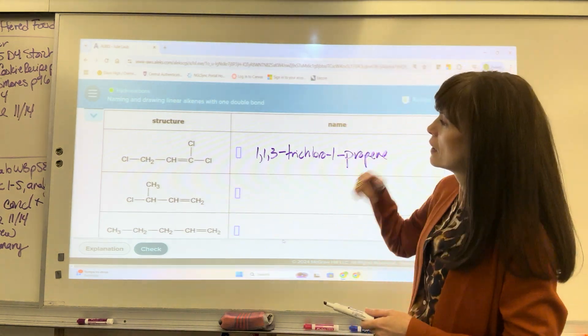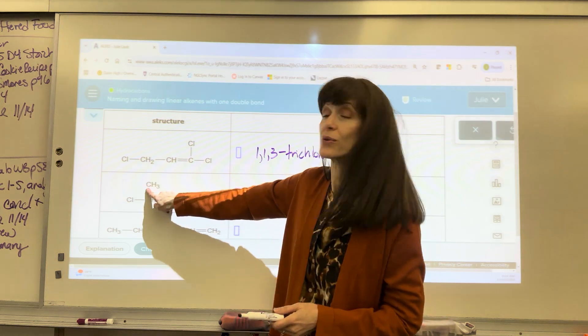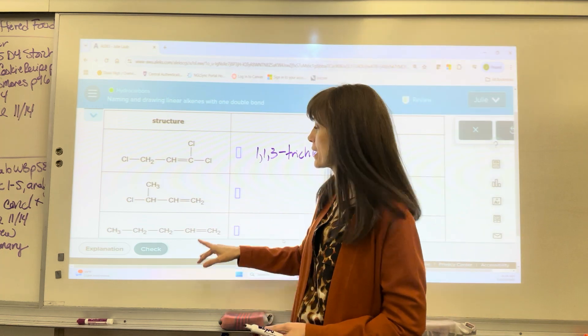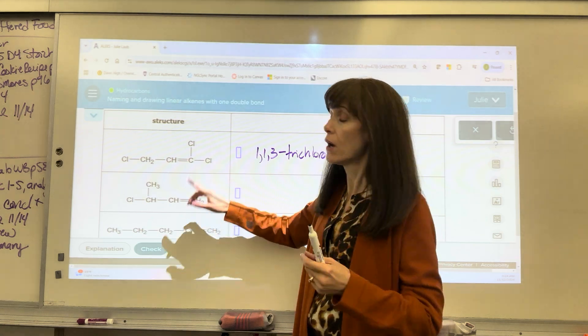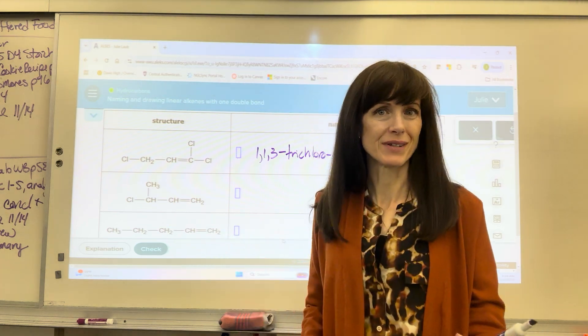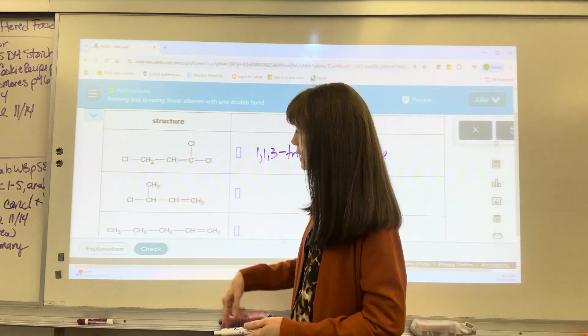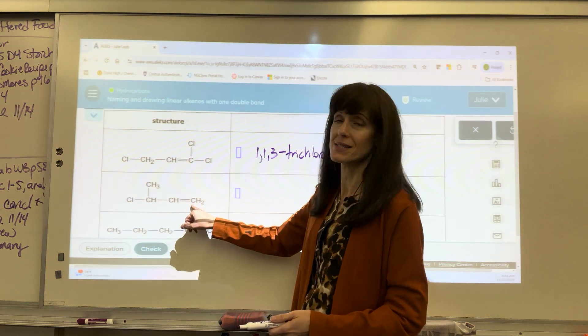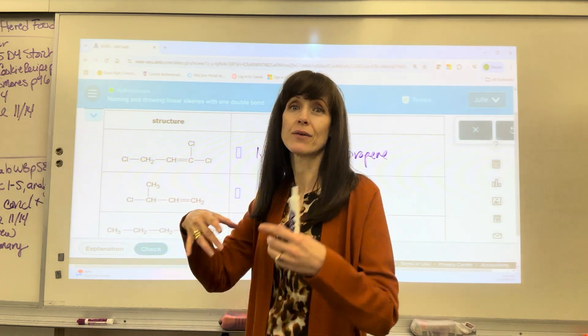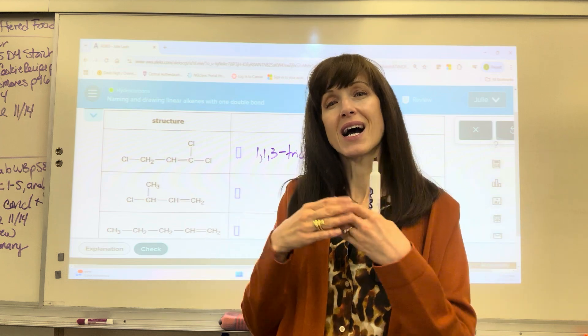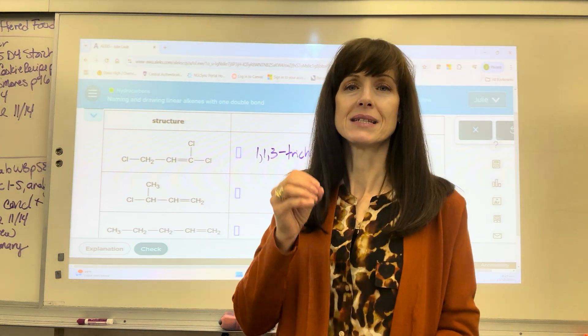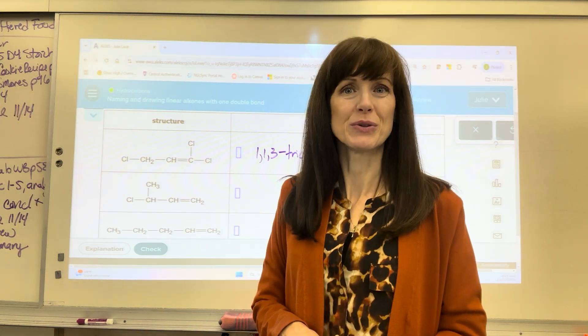Let's do this one right here. So we are going to have one, two, three, four. Tricky. Remember our longest continuous chain does not have to be straight. So I have two options. I could be one, two, three, four. The first carbon to touch the double bond is a one or left to right one, two, three, four. The first carbon to touch the double bond would be a three. You always take the smallest number. So we will number left to right. Now what I like to share with students is that double bond trumps. You always give the double bond the lowest number. It's not based on substituents like with alkanes. You just always let the double bond dictate. It gets the smallest number possible when you're doing locations.